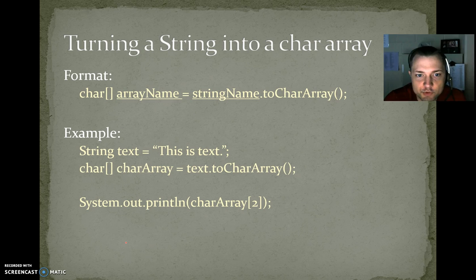For example, if we have String text equals 'this is text' and we turn that into a char array, we would have char bracket bracket, and I'm just going to name my char array charArray, equals text dot toCharArray. What that's going to do is it's going to create a character array that has the same character values as the string.